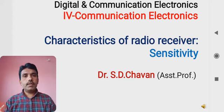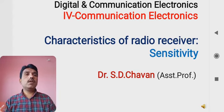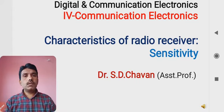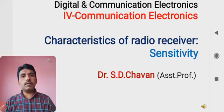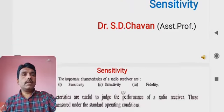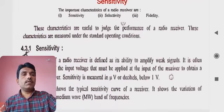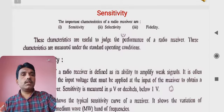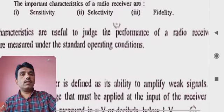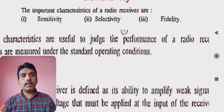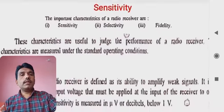Hello everybody, once again I am here with you for another session related to communication electronics. In this session we will see what are the characteristics of the radio receiver. There are three types of radio receiver characteristics: the first one is sensitivity, the second is selectivity, and the third is fidelity.